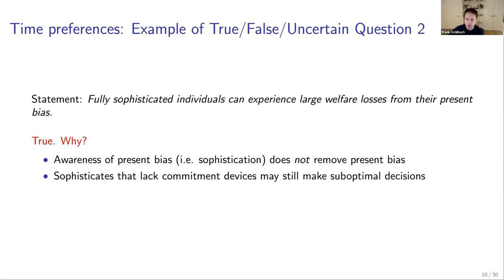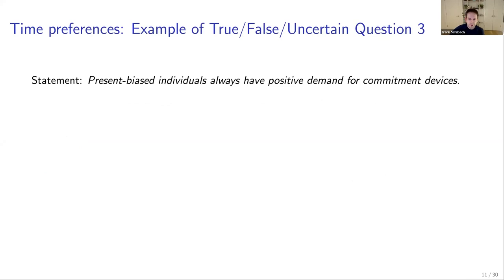This welfare is evaluated by long-run utility — if somebody makes choices where beta is not relevant under that welfare criterion, people might be a lot worse off due to their present bias. Third example: present biased individuals always have positive demand for commitment devices. The statement is false.